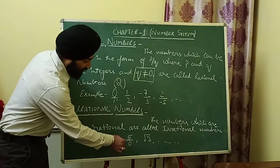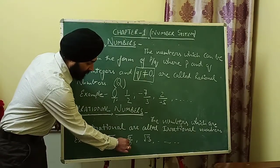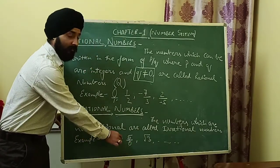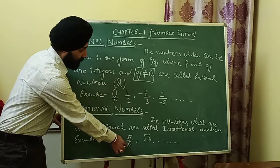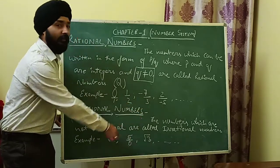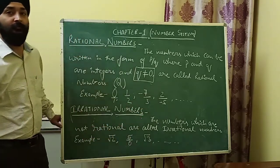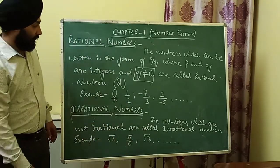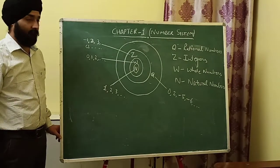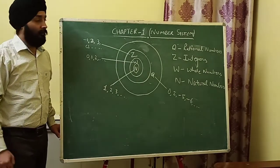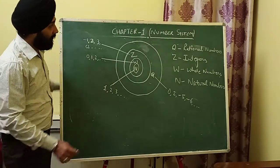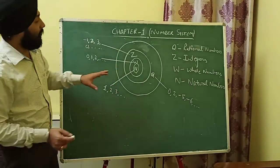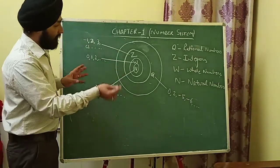Also note: if any number has zero in the denominator, that is irrational. We can understand all these relationships easily by looking at the diagram.